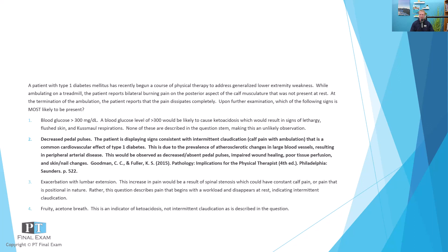The other incorrect answer options: options one and four — blood glucose greater than 300 and fruity acetone breath — are signs of diabetic ketoacidosis, or hyperglycemia to the point where DKA is very likely. This is likely to result in fruity acetone breath, Kussmaul respirations or rapid hyperpnea, flushed skin, and lethargy — all signs of hyperglycemia. None of that is mentioned in the question, so there's no indicator that the patient would have either fruity acetone breath or blood glucose greater than 300.